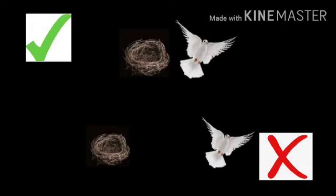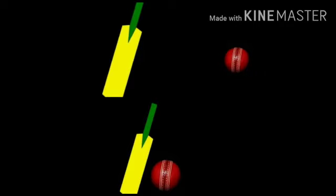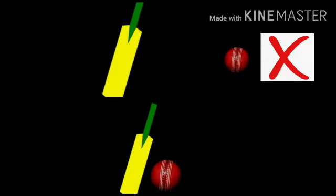In the first diagram, we can see that the bird is near the nest. And in the second diagram, we can see the bird is far away from the nest, so we will put a cross and tick in the above diagram. In the first diagram, the ball is far from the bat, so we put a cross. And in the second diagram, the ball is near the bat, so we put a tick.